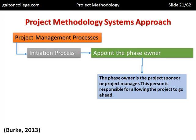Going through the initiation process, the first step is to appoint a phase owner — somebody must take responsibility and be seen as the champion of this particular project. The phase owner is the project sponsor or project manager, responsible for allowing the project to go ahead. The initiation process must start with the appointment of someone who is going to take responsibility for the project and see it through.